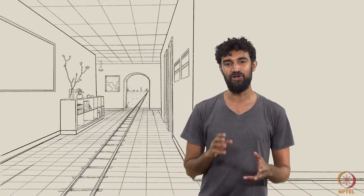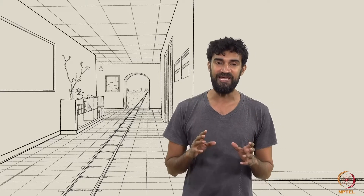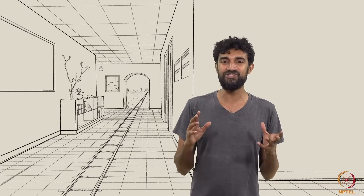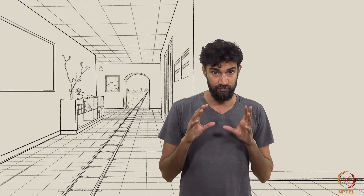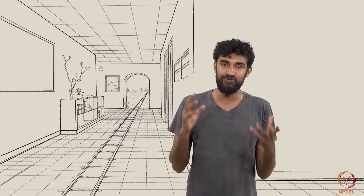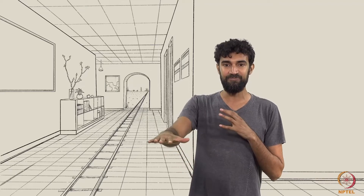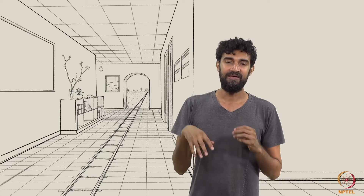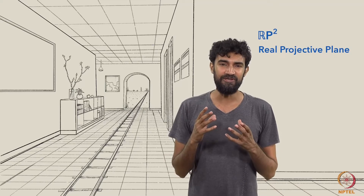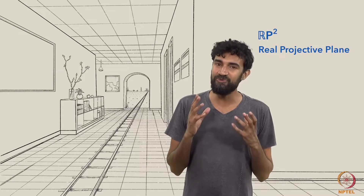As our journey comes to a close, we can also appreciate how projective geometry sits at a rich crossroads where visual intuition meets foundational ideas in mathematics. For example, perspective drawing suggested that we extend the Euclidean plane to include points at infinity. But in order to work analytically with this extended plane, it had to be reborn as RP2, the real projective plane — a space that is both intuitive but also really, really strange.